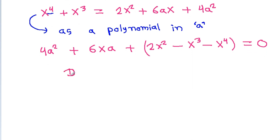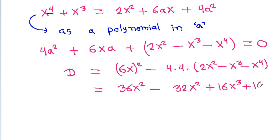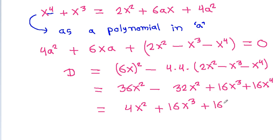If we check the discriminant D, then it is b² − 4ac, which will be (6x)² − 4 times 4 times (2x² − x³ − x⁴). That gives 36x² − 32x² + 16x³ + 16x⁴.